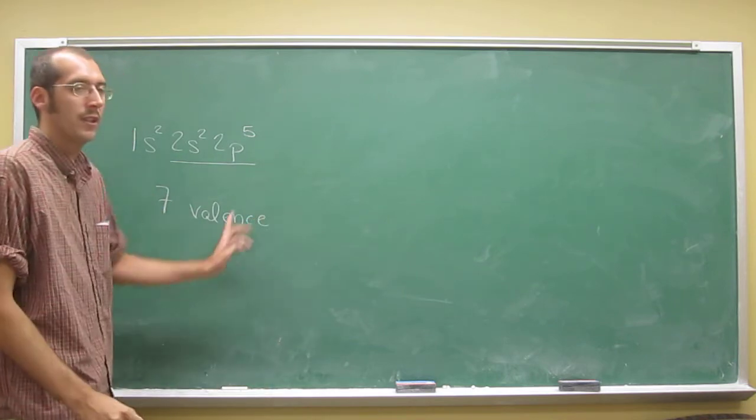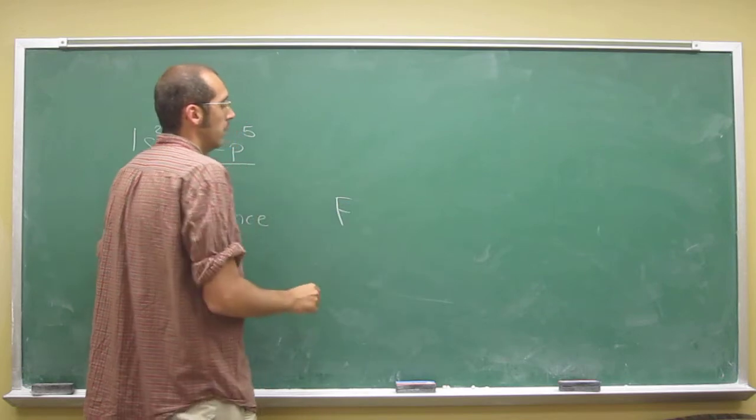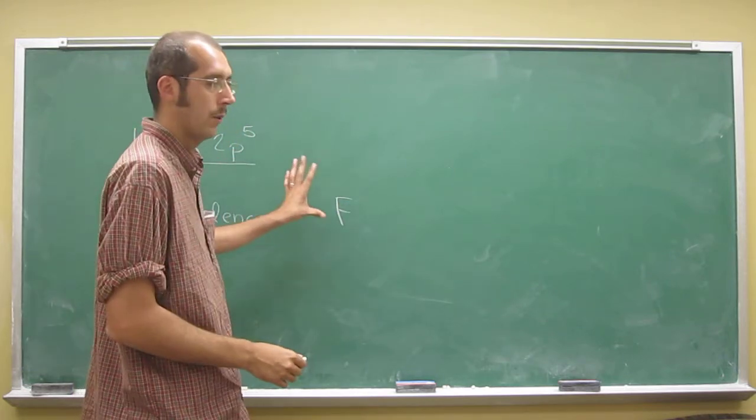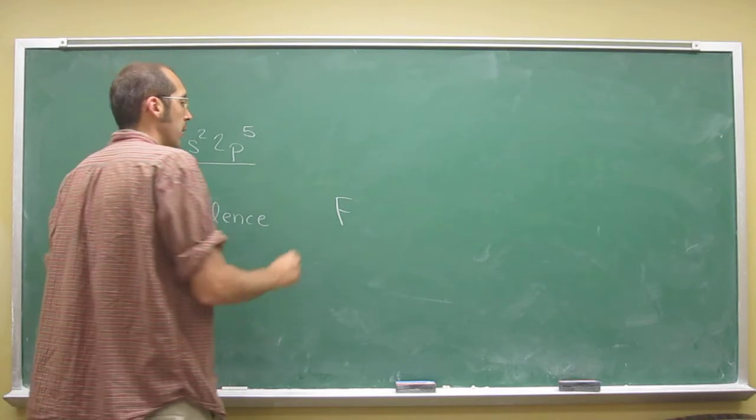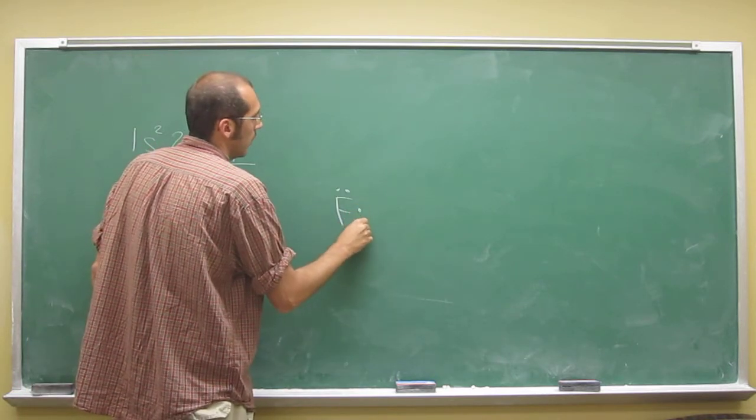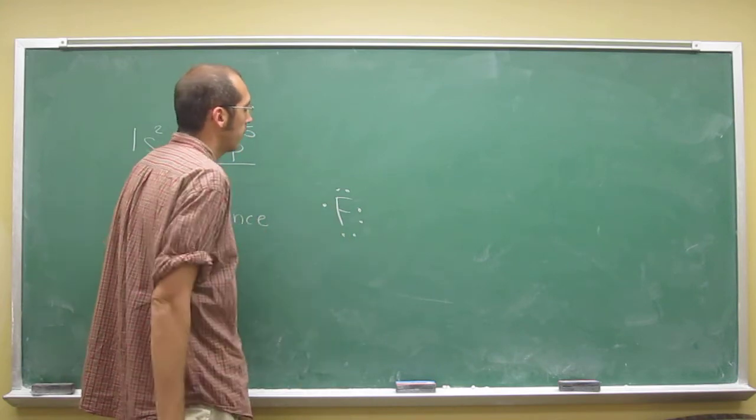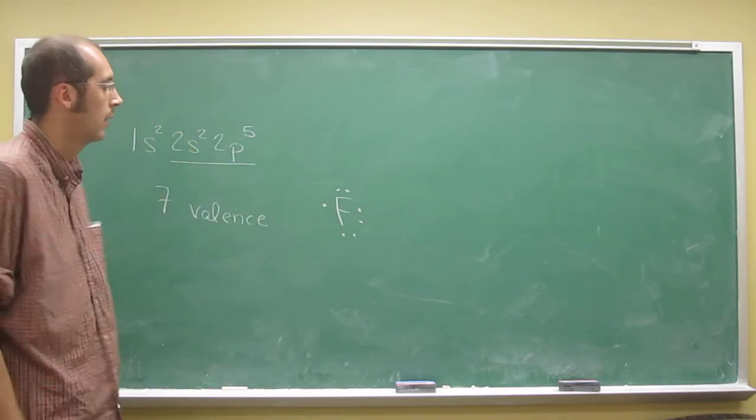And you can represent that. Later you'll learn about this. You represent this as what's known as a Lewis structure. So fluorine with its elemental symbol there, and then you draw its electrons as little dots. And you can see those 7 valence electrons.